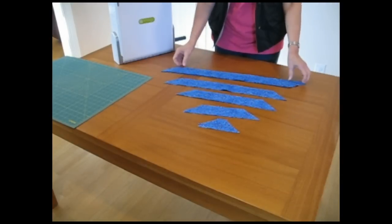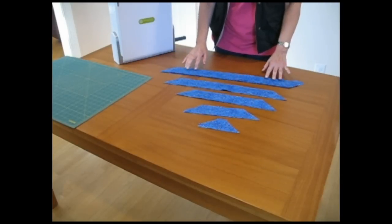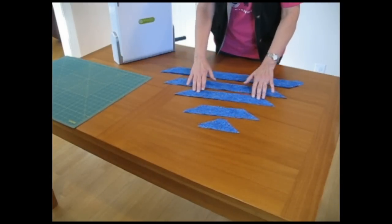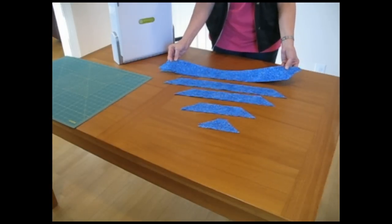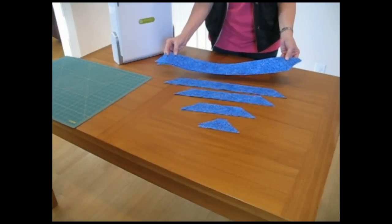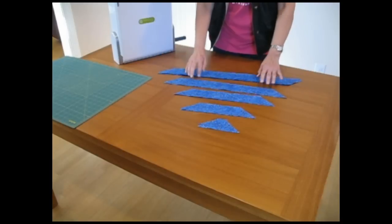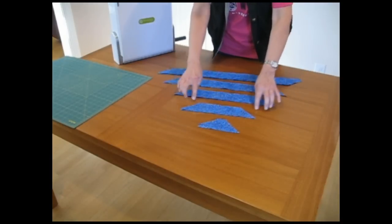After the strips have been removed from the die, I sort them by size and shape. You will see that you have some strips where the angles go in the opposite direction and other strips where the angles go in the same direction.